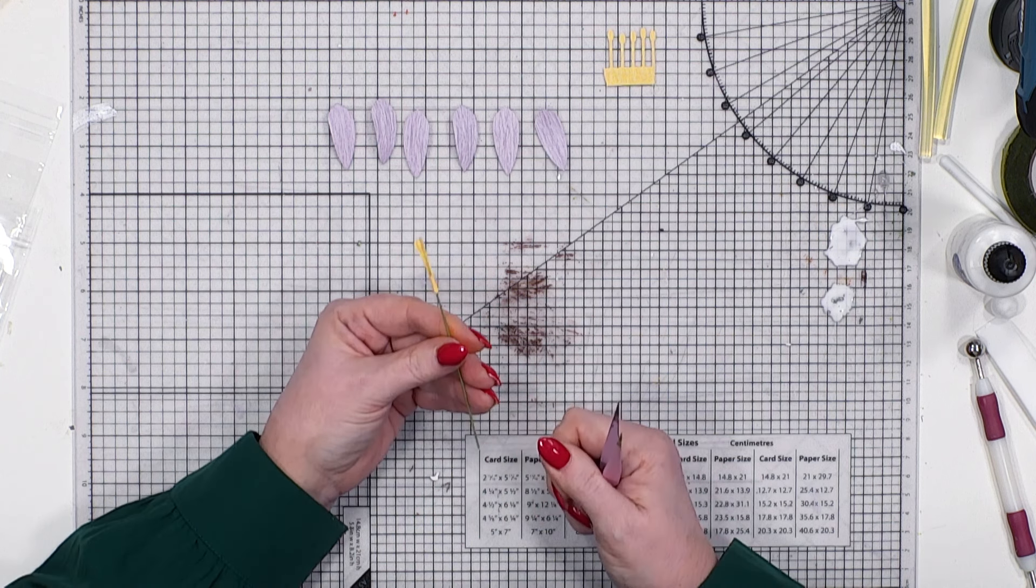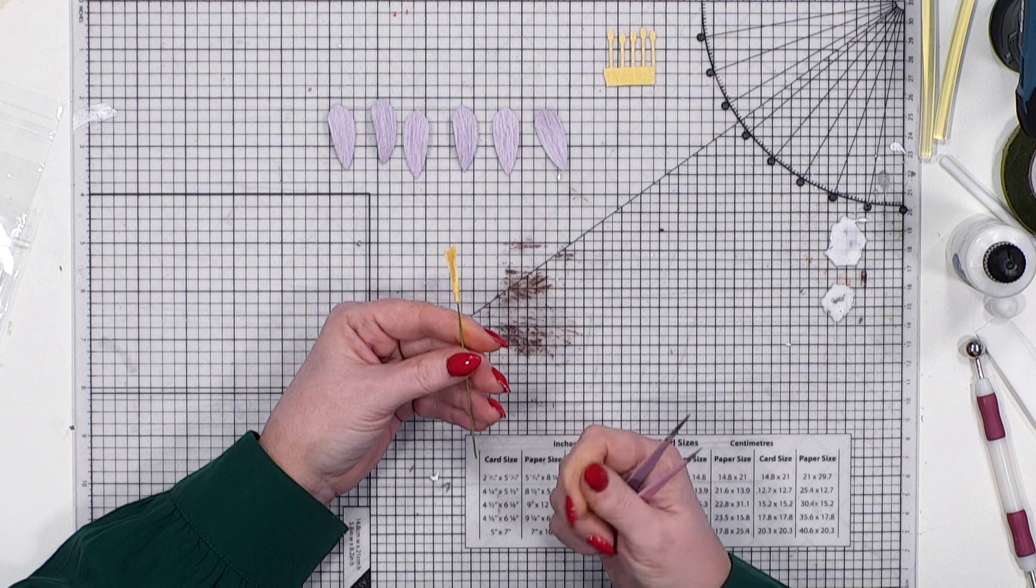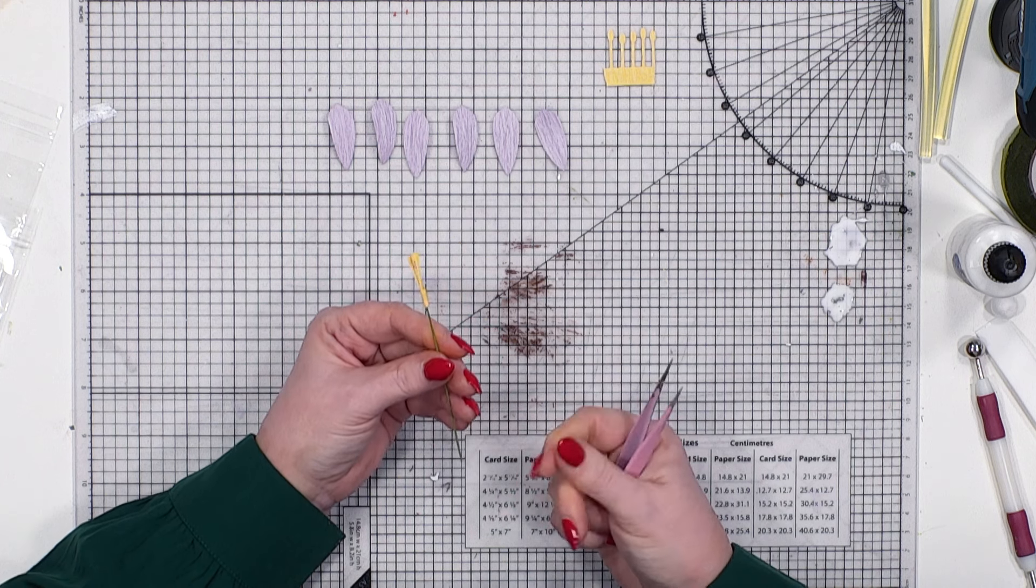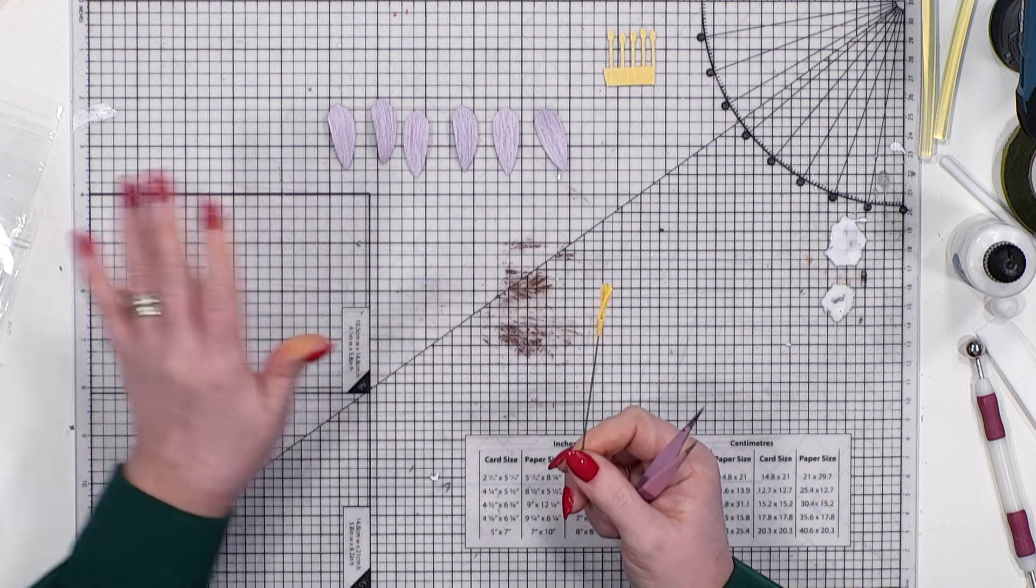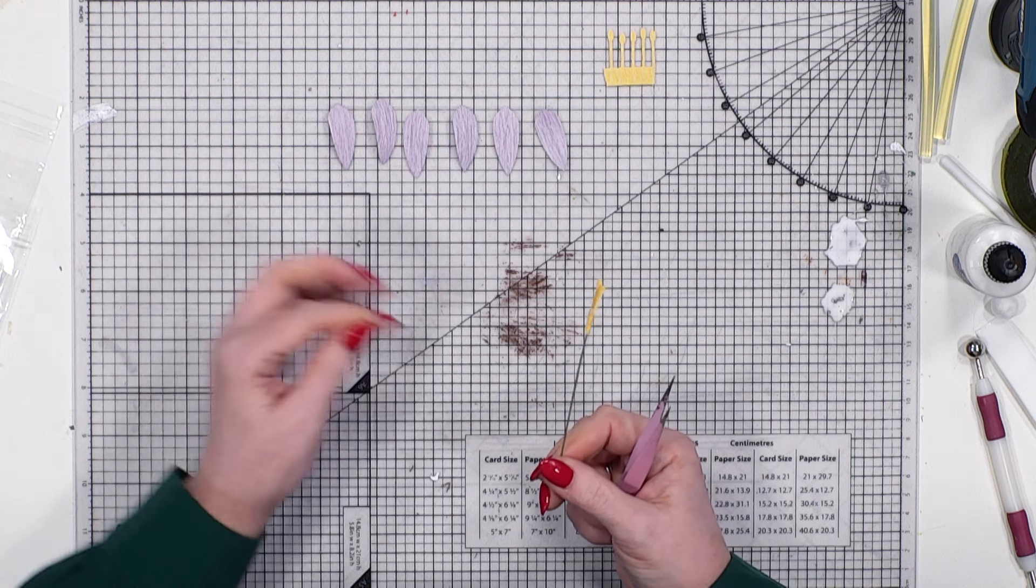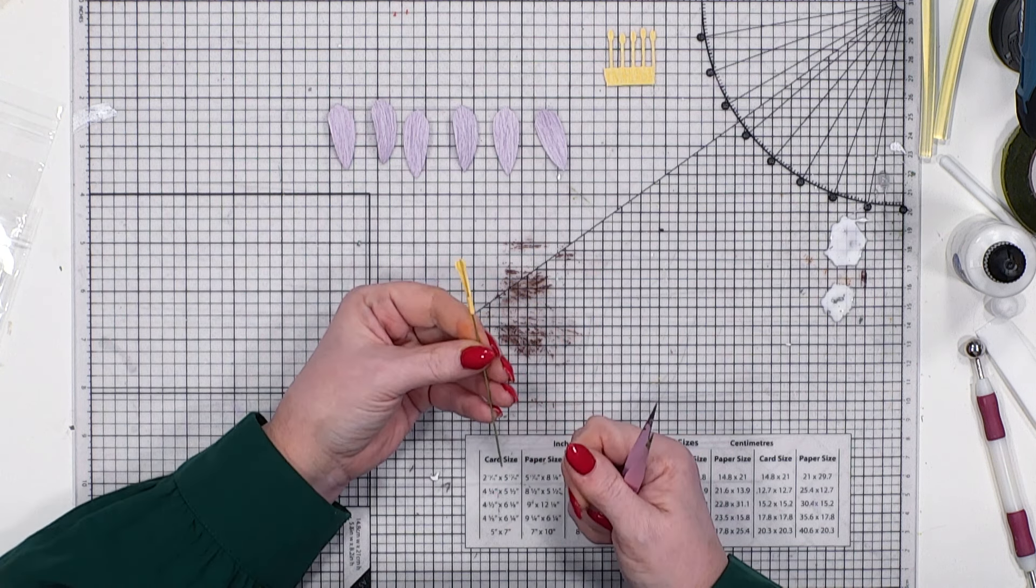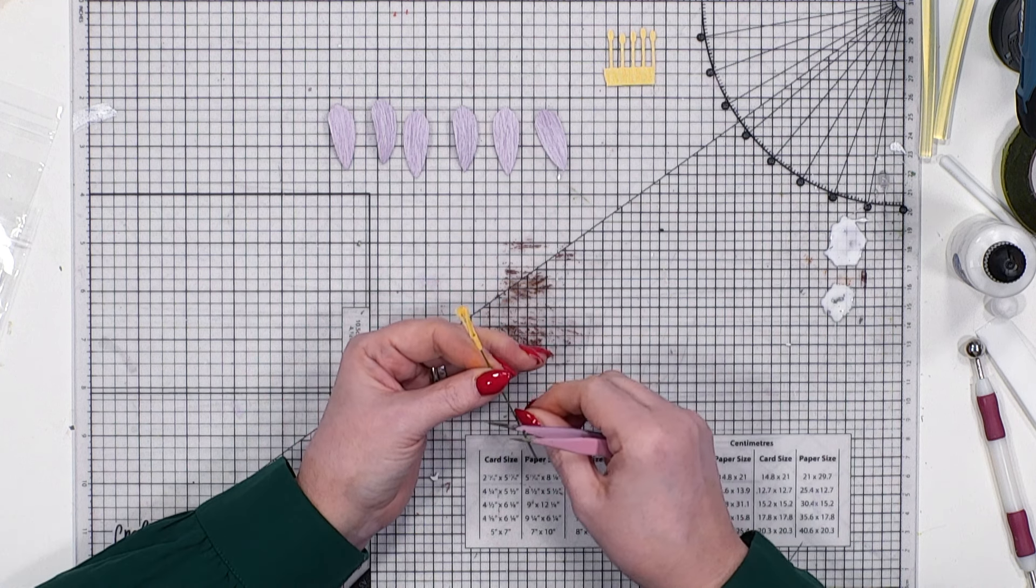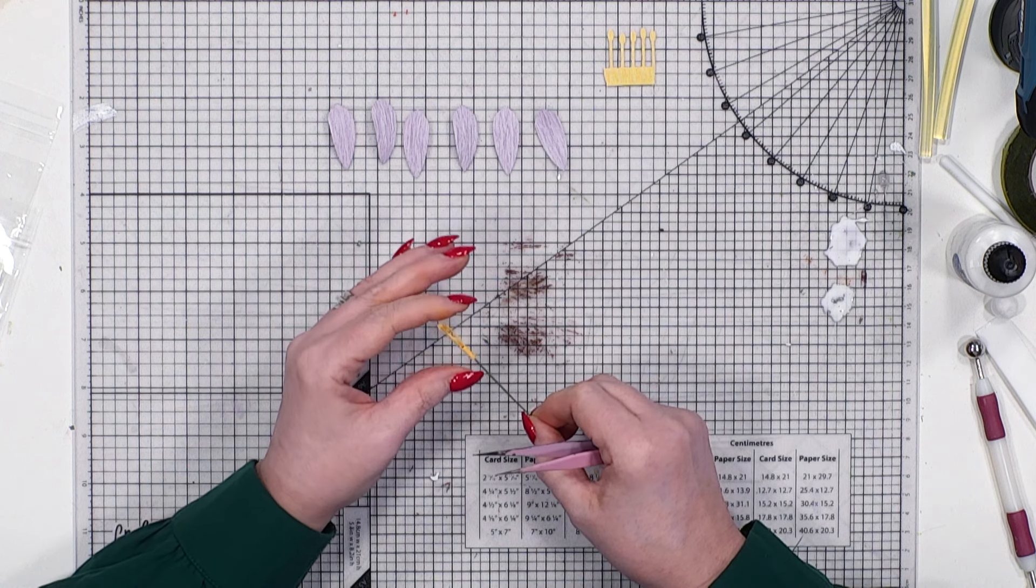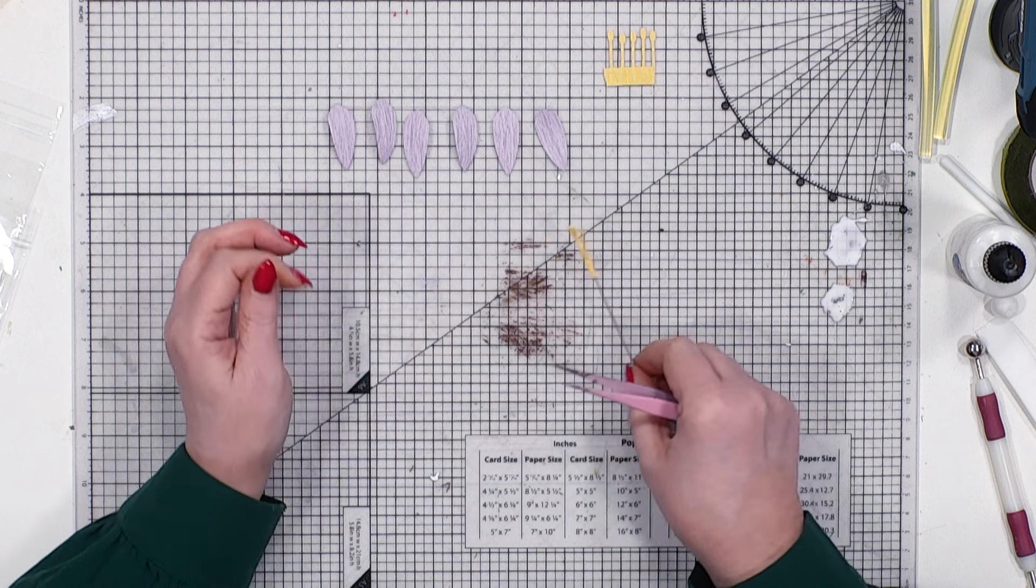Now on all of these you can actually start inking and adding colour. Some of the favourite inks that I like to use are the VersaFine Claire, you can use your Tim Holtz, all of your oxides, or you could just go ahead and start using your alcohol pens as well just to add in some extra colour onto the stamen, onto the edge.